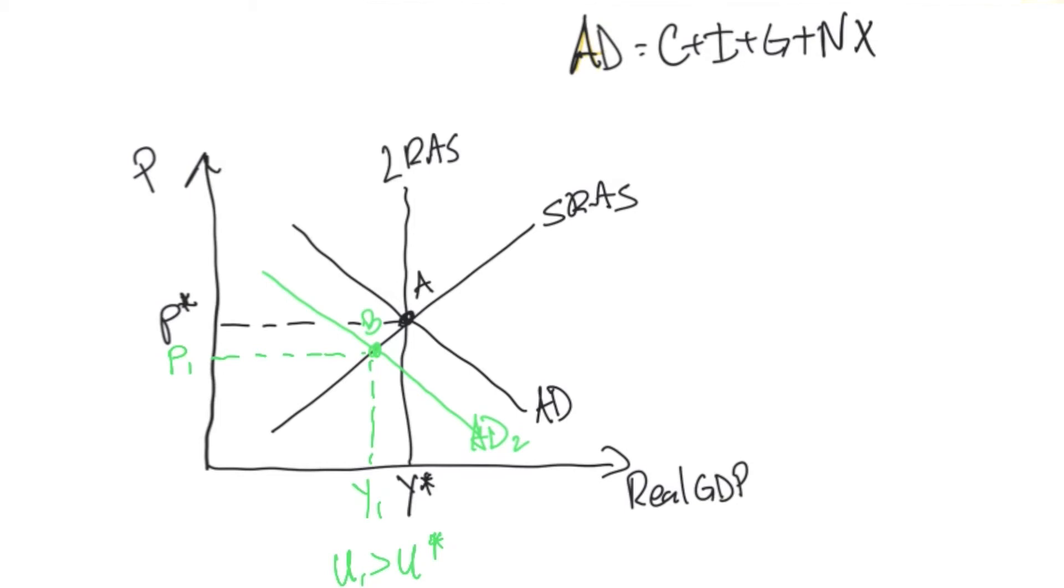So how does the economy return back to equilibrium at this point? Well, what's going to happen is, remember, people are unemployed. And when you first become unemployed, let's say you had a job where you're making $45,000 a year, when you first lose your job, you might collect unemployment, you're searching for a new job...